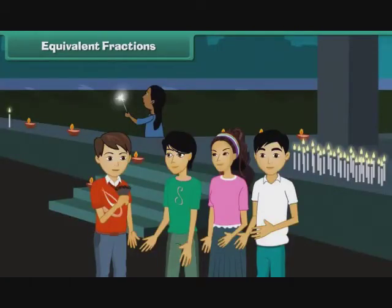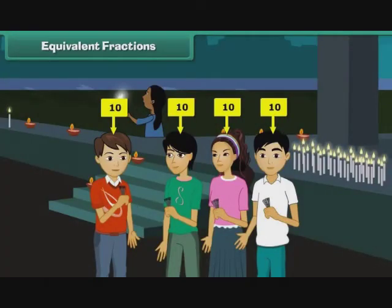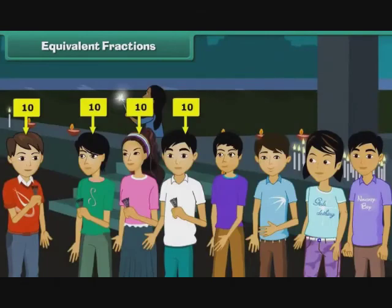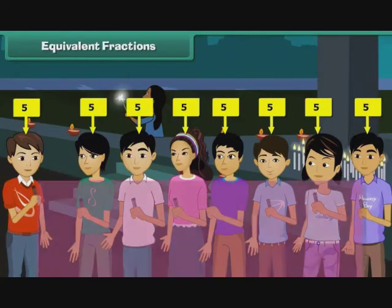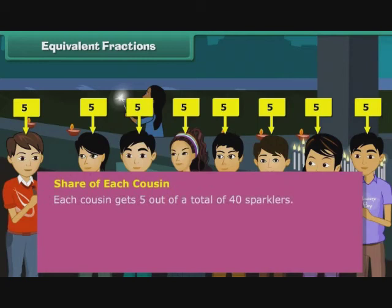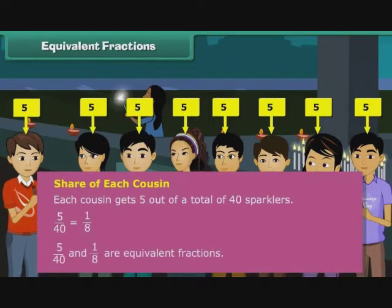Rishabh is celebrating Diwali with three cousins. He has forty sparklers. He divides the sparklers into four equal groups of ten each. Quite unexpectedly, four more cousins of Rishabh arrive to celebrate the festival with him. Now, Rishabh divides the sparklers among the eight cousins, including himself, in less than a minute. Each cousin gets five out of a total forty sparklers. Five by forty is equal to one by eight. Thus, the share of each cousin in the whole is one-eighth. Five-fortieths and one-eighth are equivalent fractions.